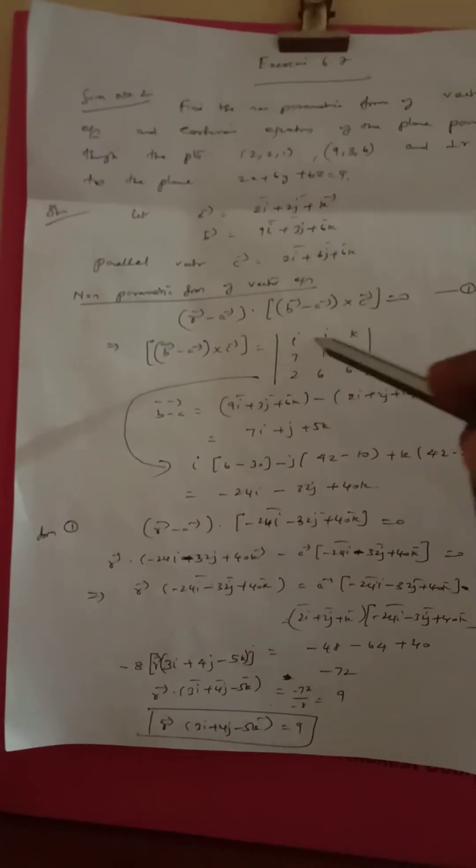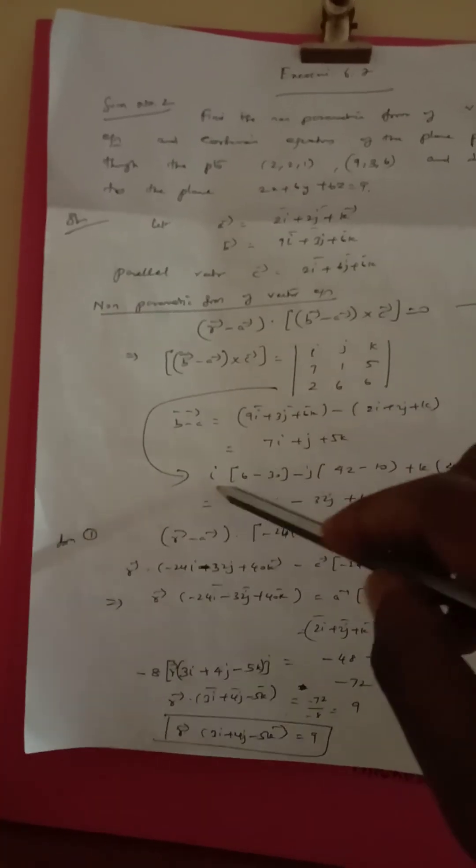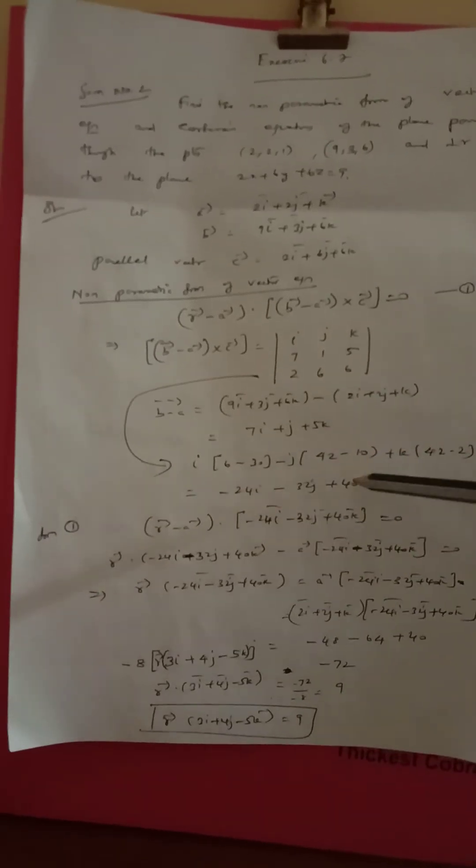We will get the determinant: i component gives 6 and 30; j component gives 42 minus 10; plus k component gives 42 minus 2 minus, resulting in 24i minus 32j plus 40k.